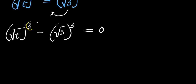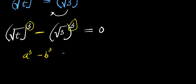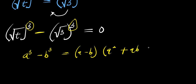Now what we have here is a cubed minus b cubed form with a minus sign. To expand this, we use the identity: a cubed minus b cubed equals a minus b, times a squared plus ab plus b squared. In this case, our a is root t and our b is root three.